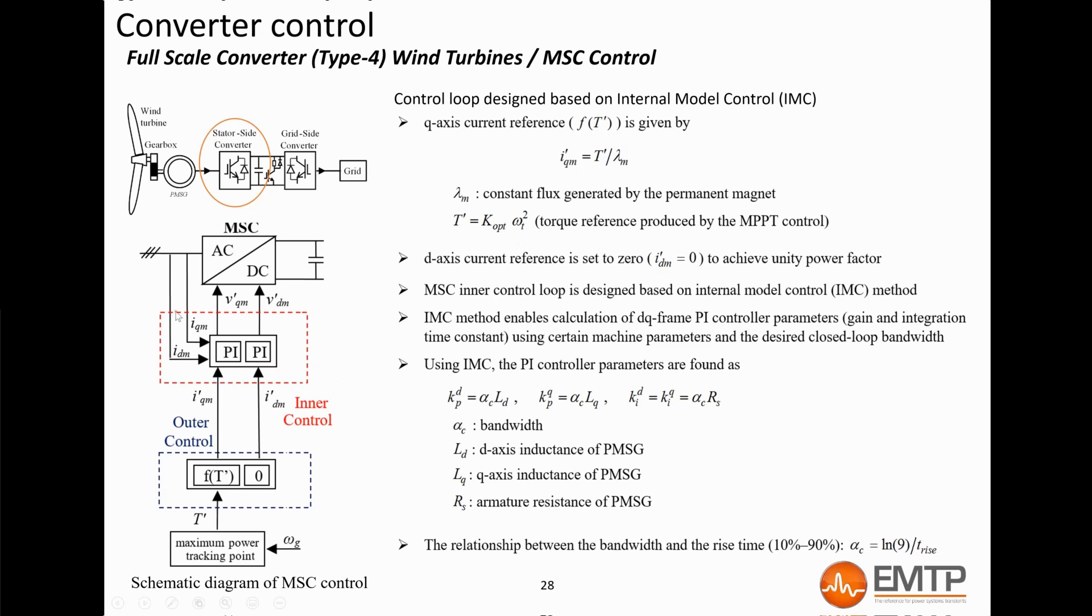The inner loops control the converter voltage to follow the references of the outer loops. The gains, which are the same for D and Q-axis, are calculated as shown here. They are using the machine parameters and follow the internal model control method. In the generic model mask, users can set the rise time, which determines the inner loop speed. It is typically set to 20 milliseconds.